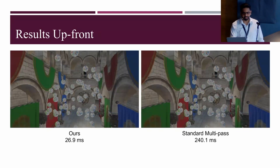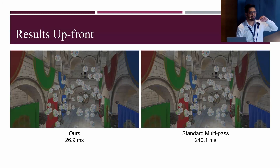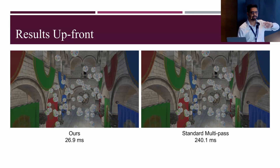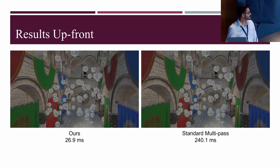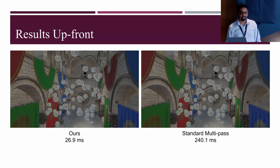We implemented dynamic environment mapping on a sponsor scene with 1.2 million polygons and 50 reflective objects, each generating six unique views — 300 views total per frame. Our algorithm takes 26 to 26.9 milliseconds, while standard multipass rendering takes about 240 milliseconds. We call our technique Eye-based Point Rendering, or EPR.